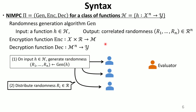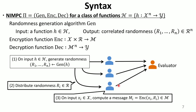First, we provide the definition of NIMC. We consider a class of N-input functions H. An NIMC for H consists of three algorithms. First, a randomness generation algorithm takes as input a function to compute and outputs correlated randomness. Each piece is sent to the i-th player in the setup. Then, each player computes an encryption function on their private input and their randomness, and sends a message M_i to the evaluator.